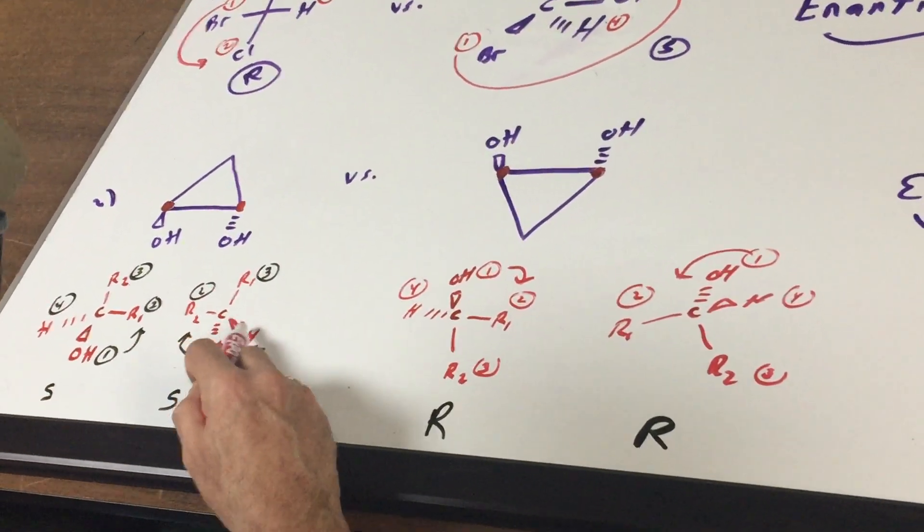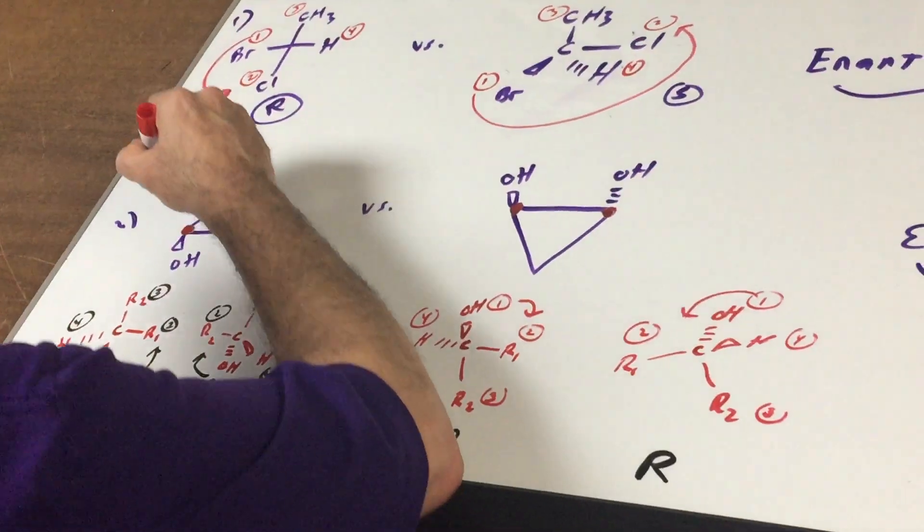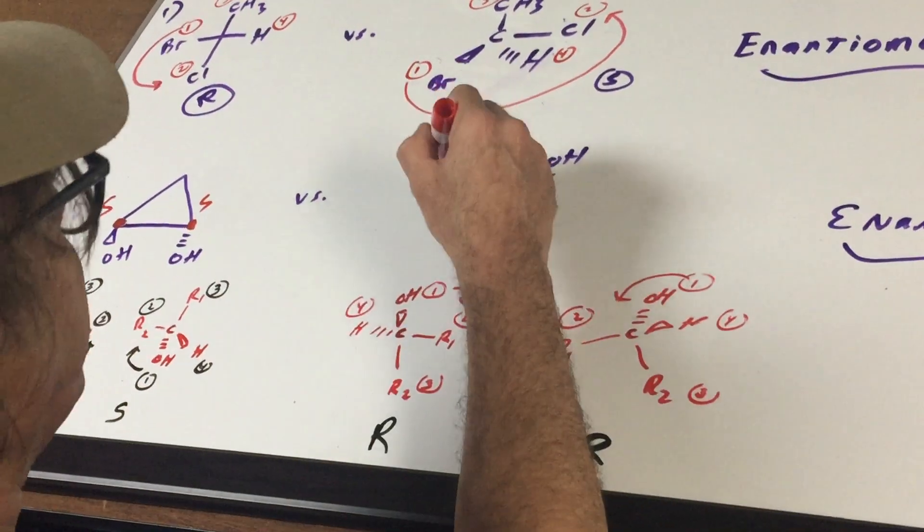But be careful now. The H is a wedge. So instead of an R, it's going to be an S. So we have here an SS.